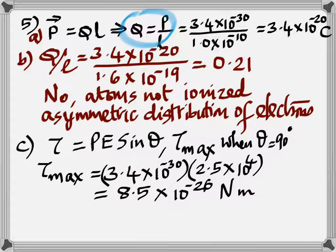And then the C part to calculate the torque is P, E, sin theta. And the torque is maximum when theta is 90 degrees. So get maximum torque.